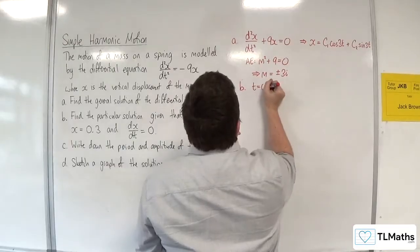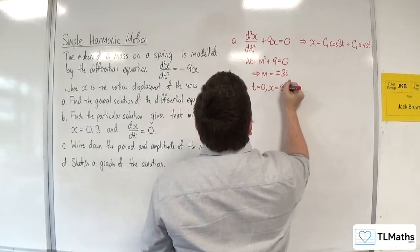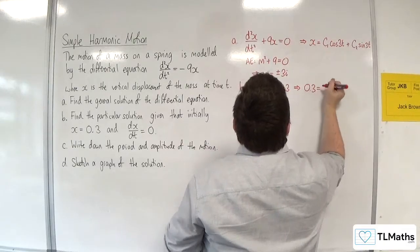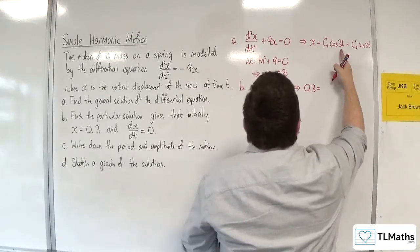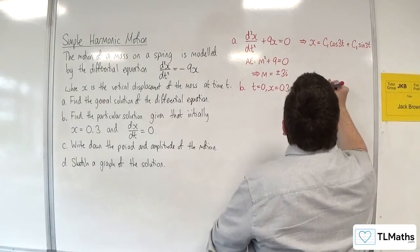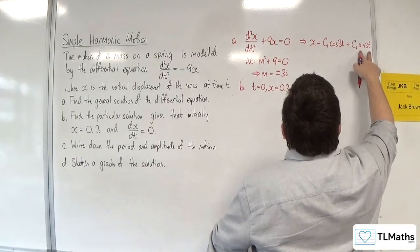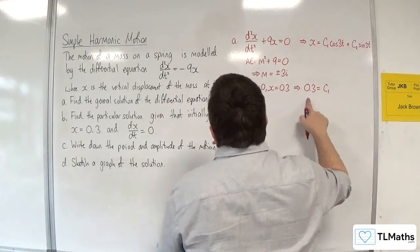So when t is 0, x is 0.3, so we're going to get 0.3 is equal to, if t is 0, cosine of 0 is 1, so I'll get c1, and sine of 0 is just 0. So c1 is equal to 0.3.